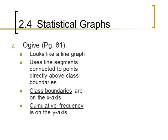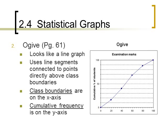The second type of graph is an ogive graph. An ogive graph is found on page 61 in your textbook. Now, an ogive graph also looks like a line graph. It uses line segments and you're connecting the points directly above class boundaries, so it's different because you are graphing class boundaries on the x-axis, whereas in a frequency polygon you were plotting class midpoint values. And on the y-axis you are looking at cumulative frequencies.